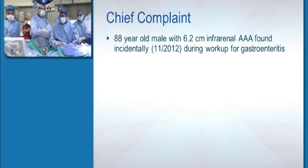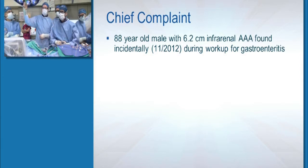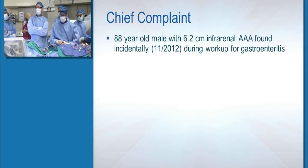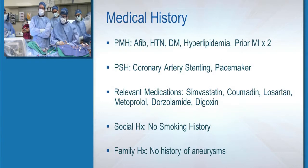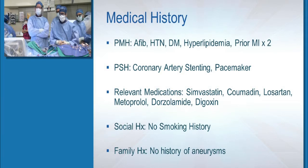Our patient is an 88-year-old male with a 6.2 centimeter infrarenal abdominal aortic aneurysm which was found incidentally last November. He was admitted to hospital for gastroenteritis and was found during his workup. His past medical history is significant for hypertension, diabetes, and hyperlipidemia. His past surgical history and medications are listed. Social history is significant for no smoking history and no family history of aneurysms.